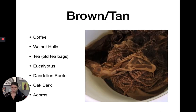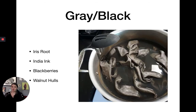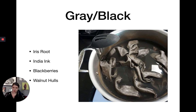For brown and tan: you can get these by mixing different colors, since color theory works in dyeing too. Coffee, walnut hulls — walnut is quite reliable for a nice deep brown — old tea bags, eucalyptus leaves, dandelion roots (though sometimes pale), and oak bark and acorns. Black is very hard to get — if you need black, just buy it. Iris root gives a nice gray. India ink soaked for a long time can get close to black, as can walnut hulls for a brown-black. Even commercial black dye usually turns a purple color.